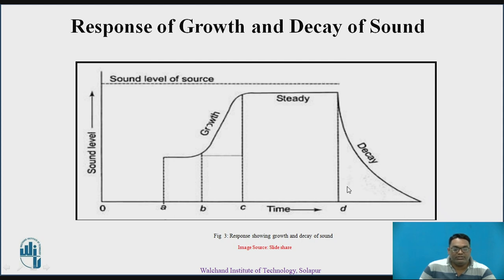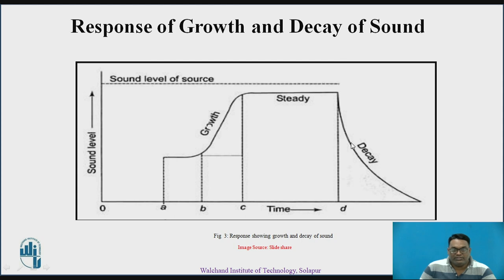This response gives a good idea about growth and decaying of sound. The time periods for growth from A to C — AB and BC — have a constant time period. The constant state from C to D has the maximum time period, whereas the decaying time period drops very drastically, so the time period at that point is much less.